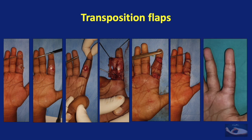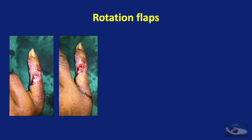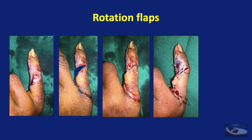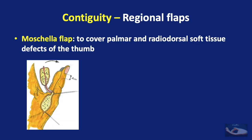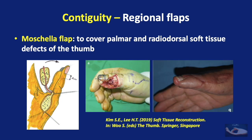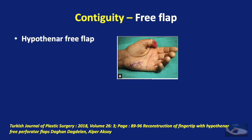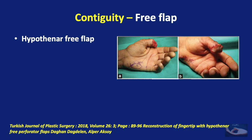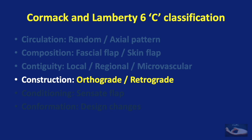The rotation flap is ideal for dorsal defects where the skin is more lax, and the donor side can be closed primarily. Among the intrinsic flaps, an example of a regional flap would be the Moschella flap, used to cover palmar and radiodorsal soft tissue defects of the thumb. The movement of an intrinsic flap can also be as a free flap, as shown in this example of the hypothenar free flap done for resurfacing a defect caused by amputation of the thumb.